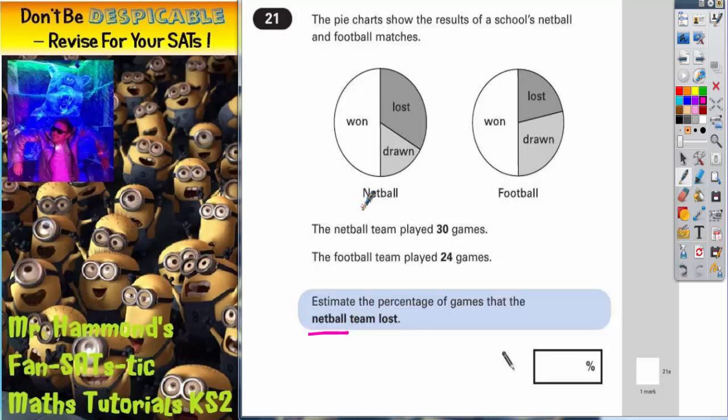So the first question, we're only interested in the netball pie chart and we're talking about lost. Now there are a couple of ways you could have done this. The first way is to draw a section around the lost section and then think, well how many times does this section roughly fit in the whole pie chart? Well we could do this same section again over here and then we could do the same section again here. So lost, and that's three sections, so lost is roughly a third.